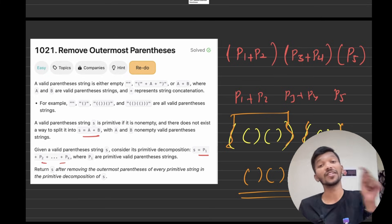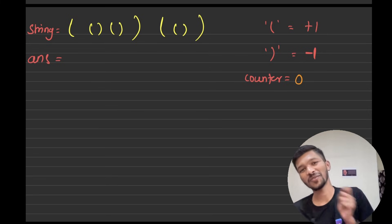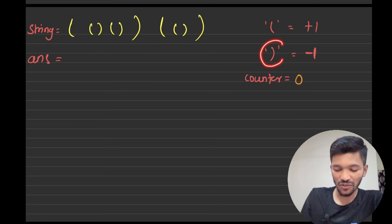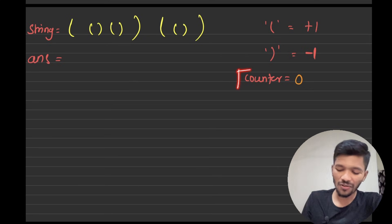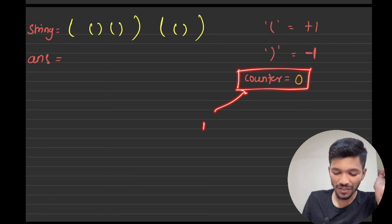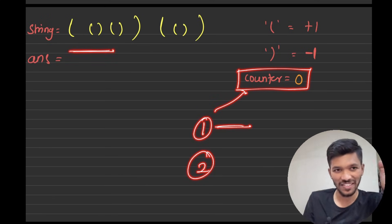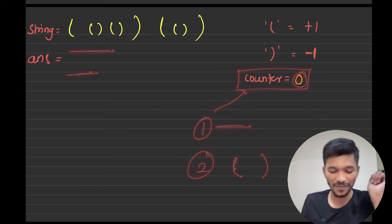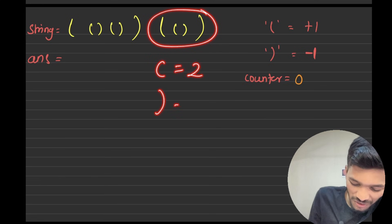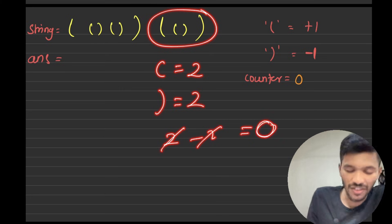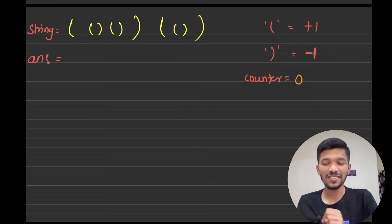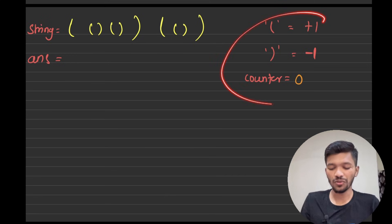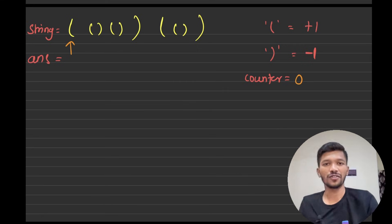Now let's think about how we can approach this problem. There are two things to consider: whenever we come across an opening bracket, we increase the counter by one, and whenever we come across a closing bracket, we decrease the counter by one. Initially the counter is zero. When the counter is zero, there are two possibilities: either we haven't started traversing the string, or the total number of opening parentheses equals the total number of closing parentheses.